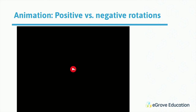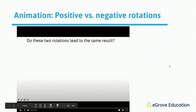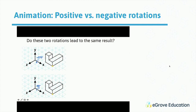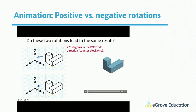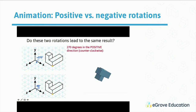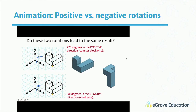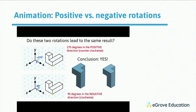Let's look at positive and negative rotations. Going positive 270 degrees about the X axis and going negative 90 degrees about the X axis end up at the same result. So if an object needs to rotate 270 degrees about an axis, it might be easier to visualize it going the other direction — negative 90 degrees — so you only have to rotate it once.